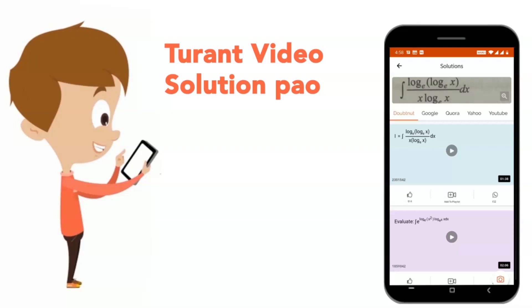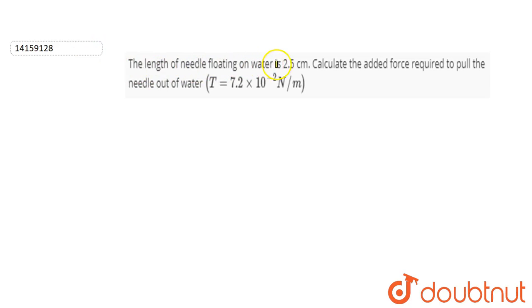Hi guys, we have a question. The length of the needle floating on water is 2.5 cm. Calculate the added force required to pull the needle out of the water.